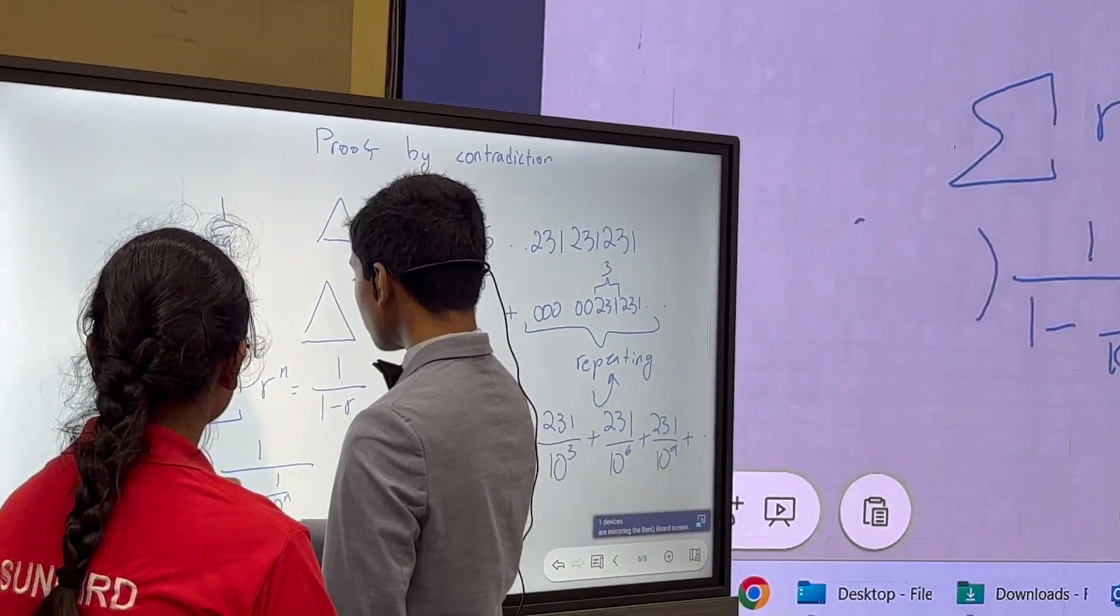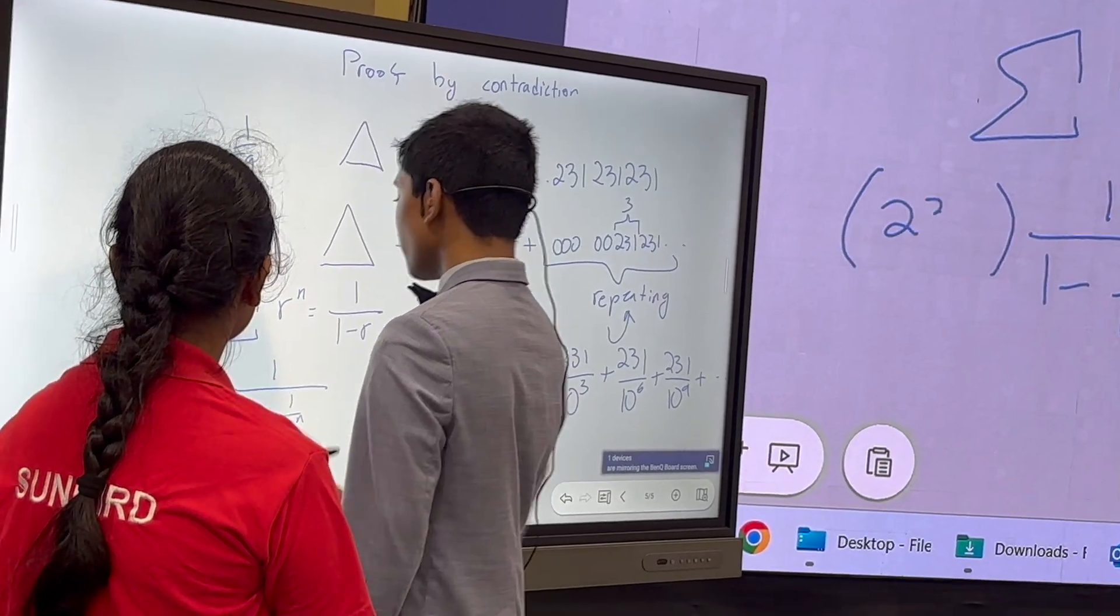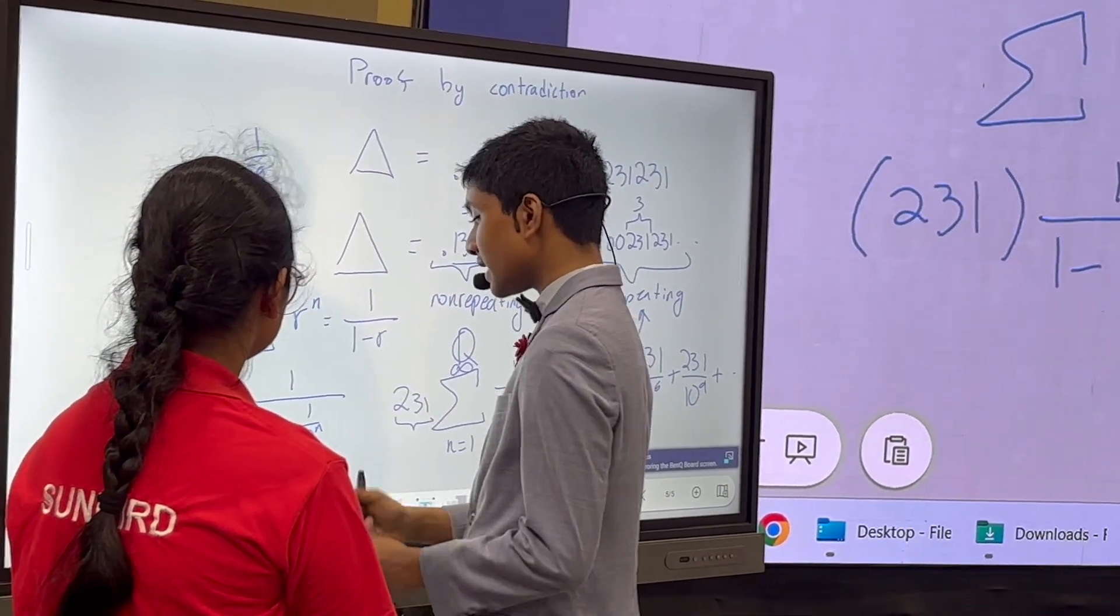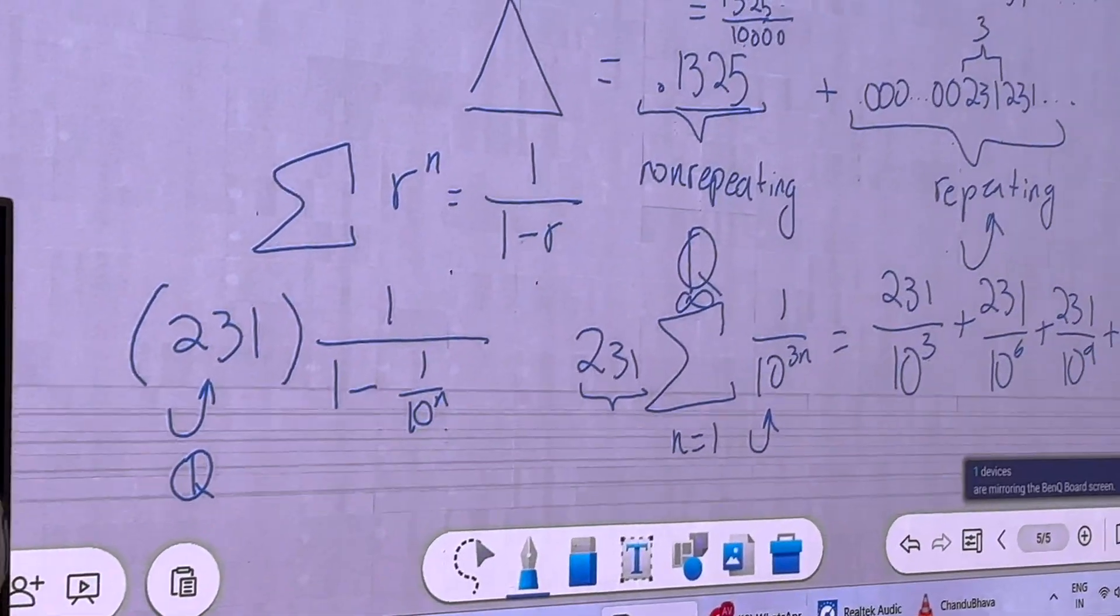And that's going to be multiplied by what makes up the repeating part. But of course, what makes up the repeating part, since it terminates, has to be rational. So that is a rational number. And since it's 231 in this case, it's actually an integer.